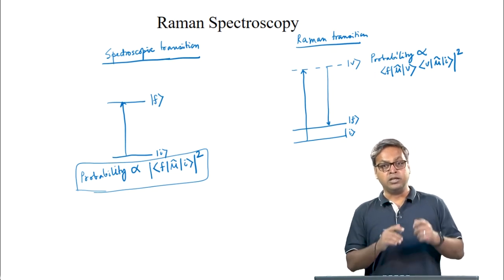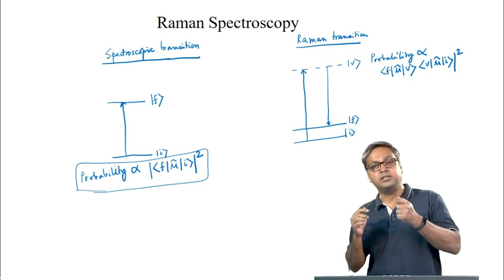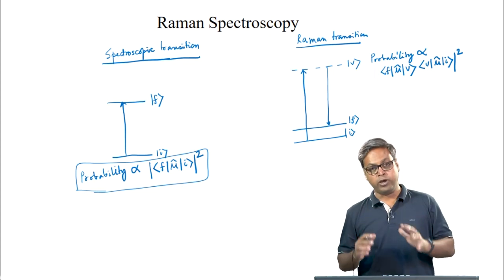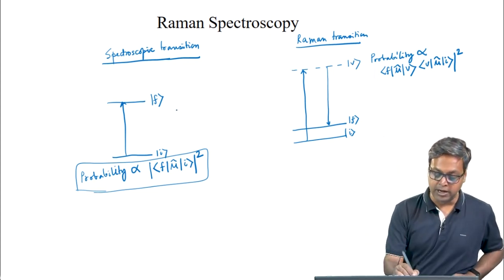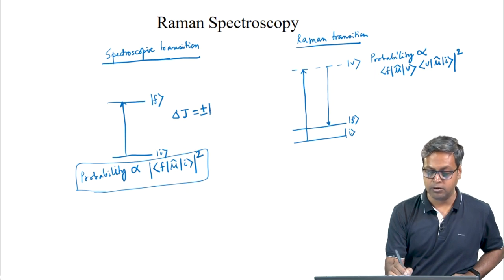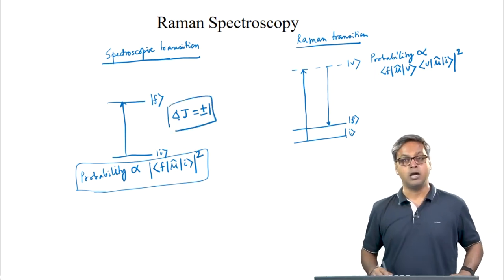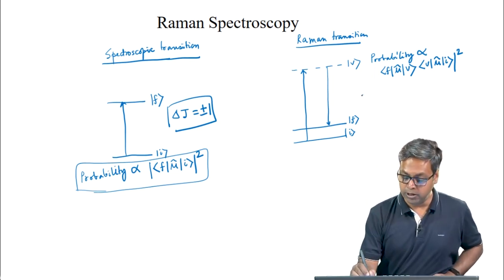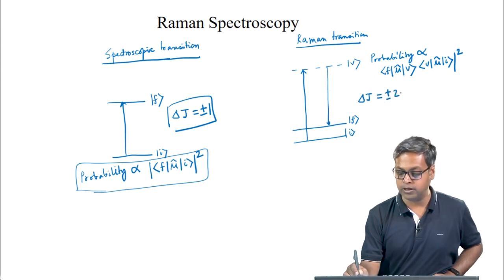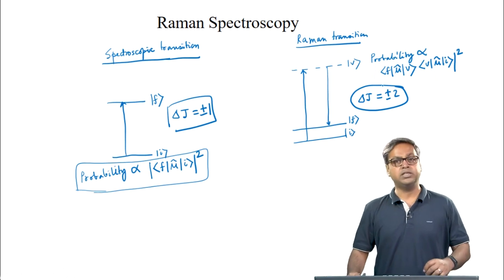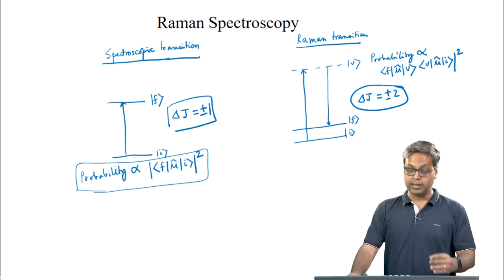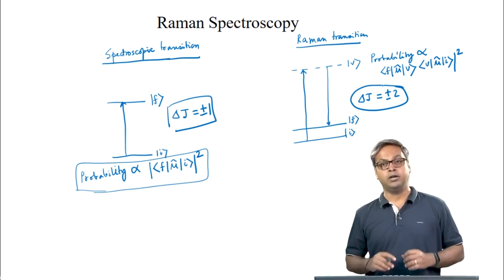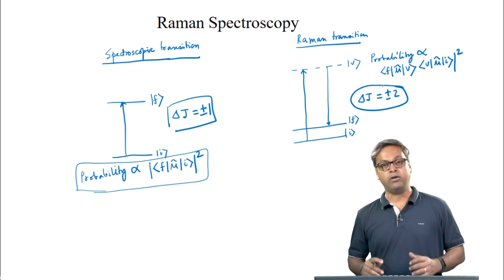When the initial and final states are rotational states, the selection rule for microwave or rotational spectroscopy is ΔJ = ±1. But for rotational Raman spectroscopy, the selection rule is ΔJ = ±2. We will discuss more on this in the next lecture.